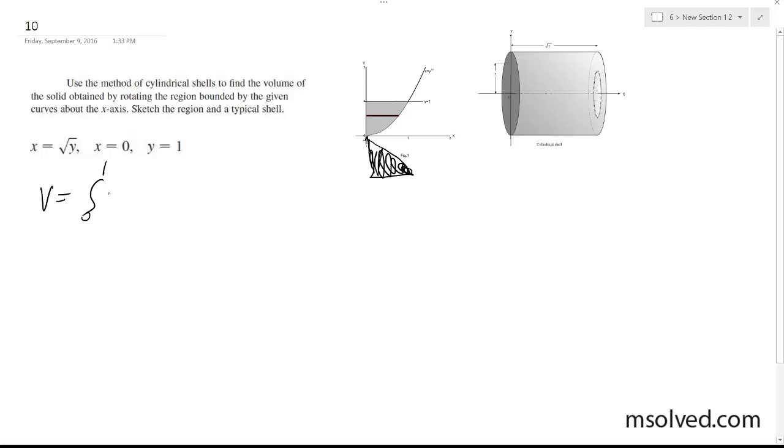Alright, so 0 to 1 and what we have here is 2πy times the square root of y dy. Alright, so volume is equal to 2π from 0 to 1, y to the 3 halves, dy.